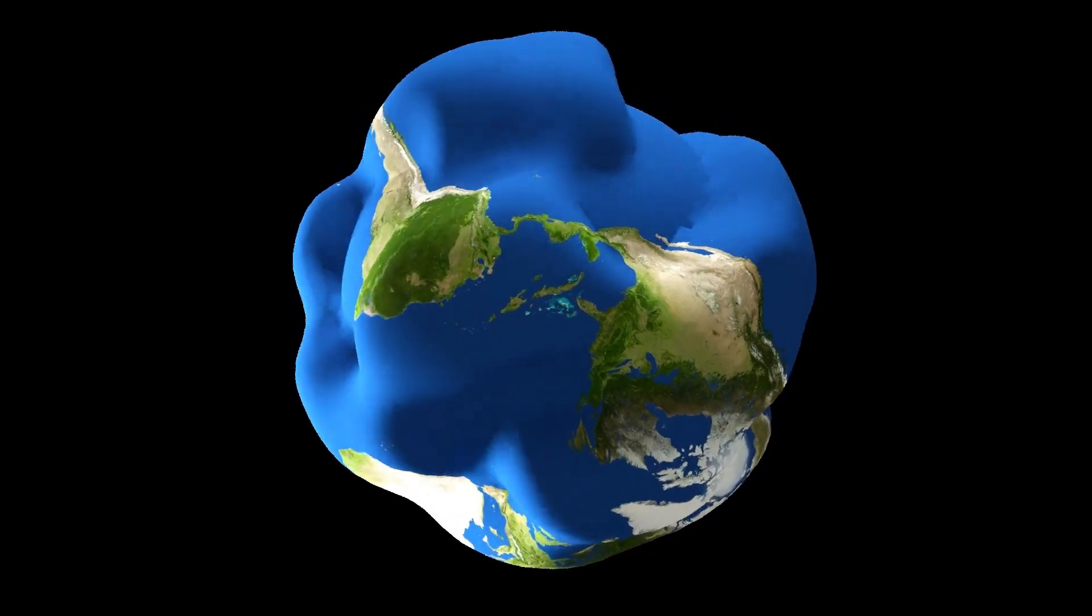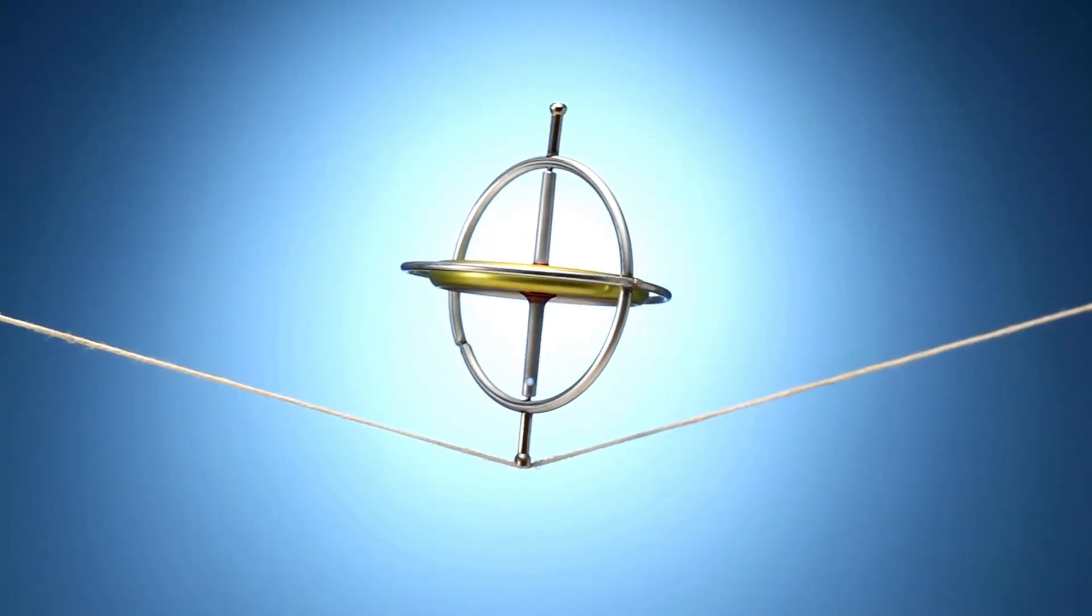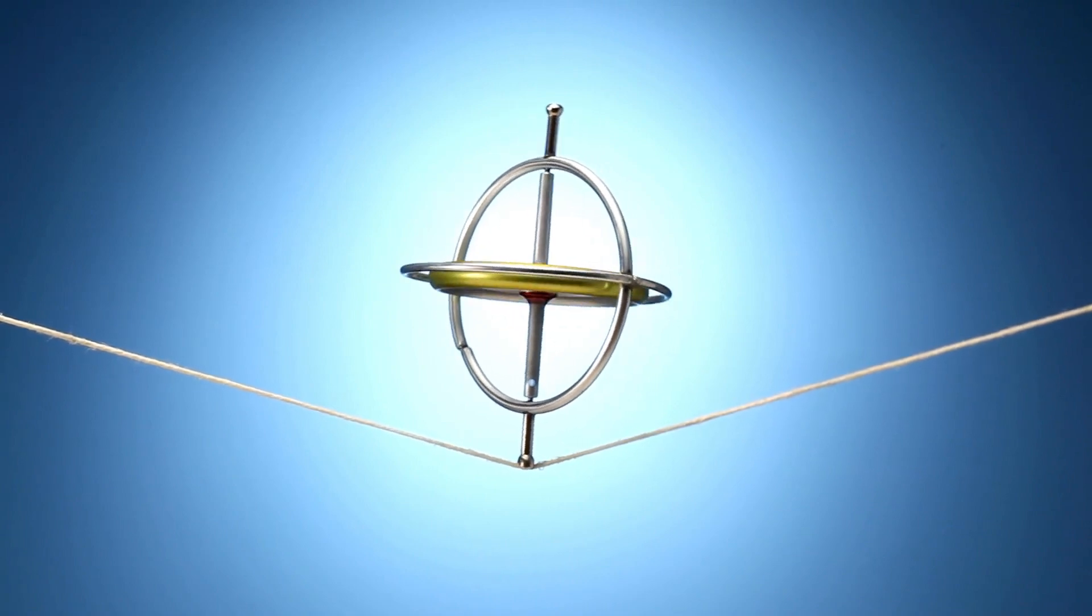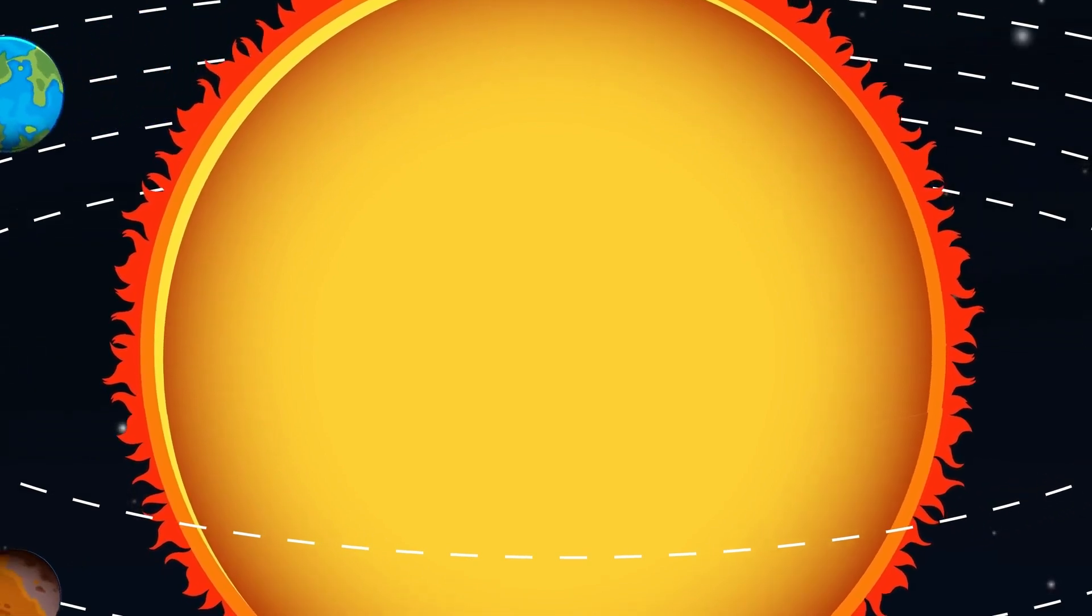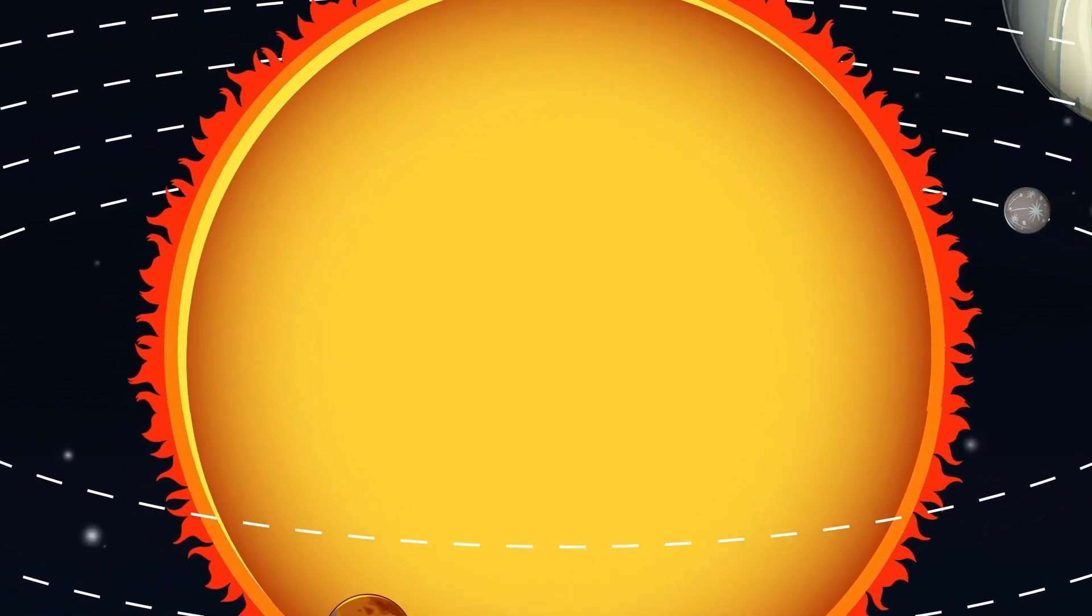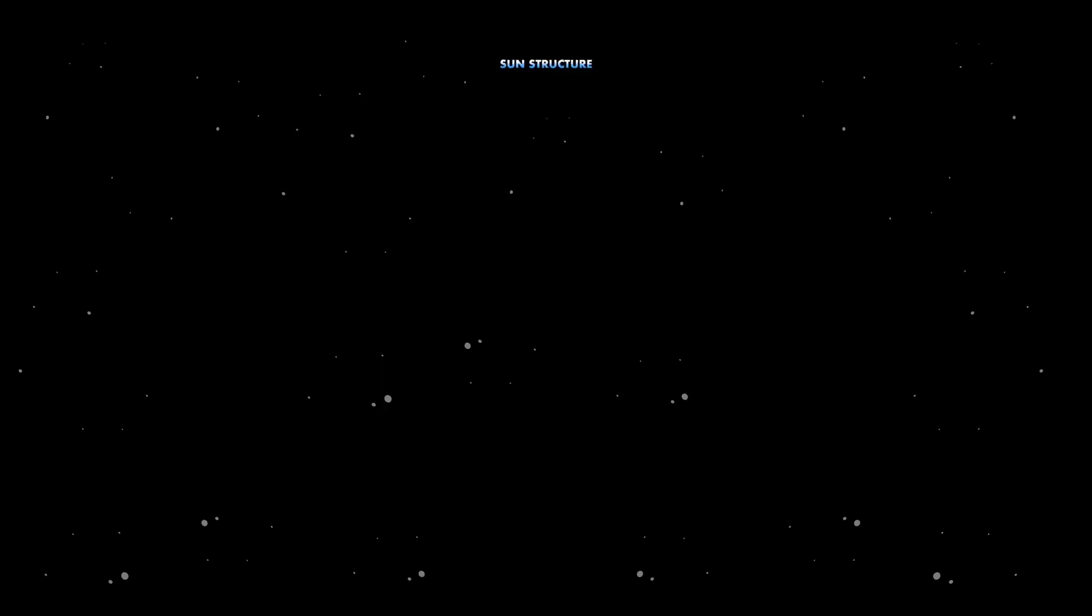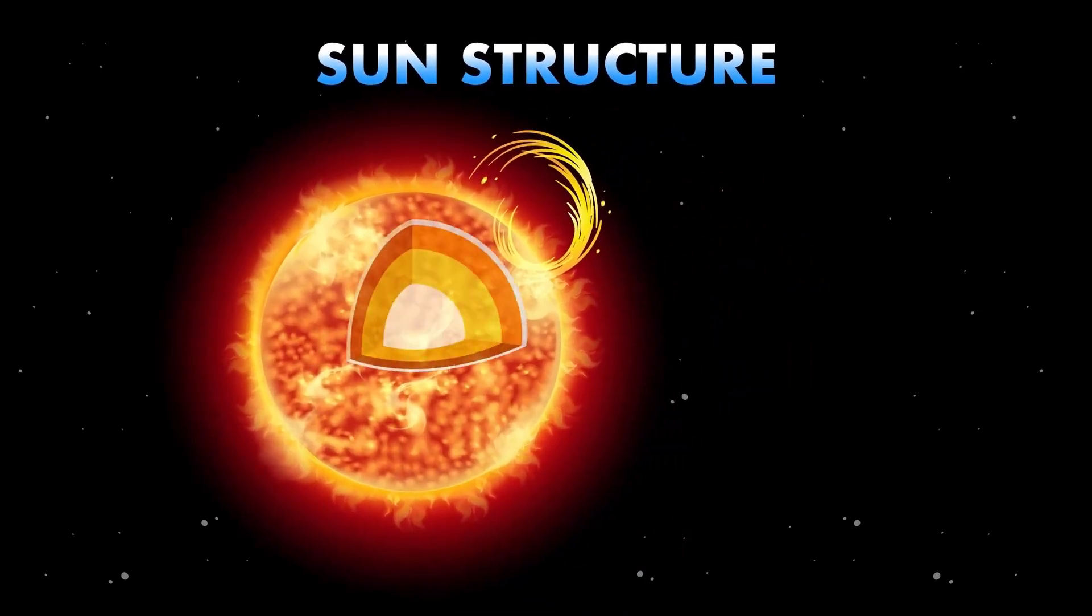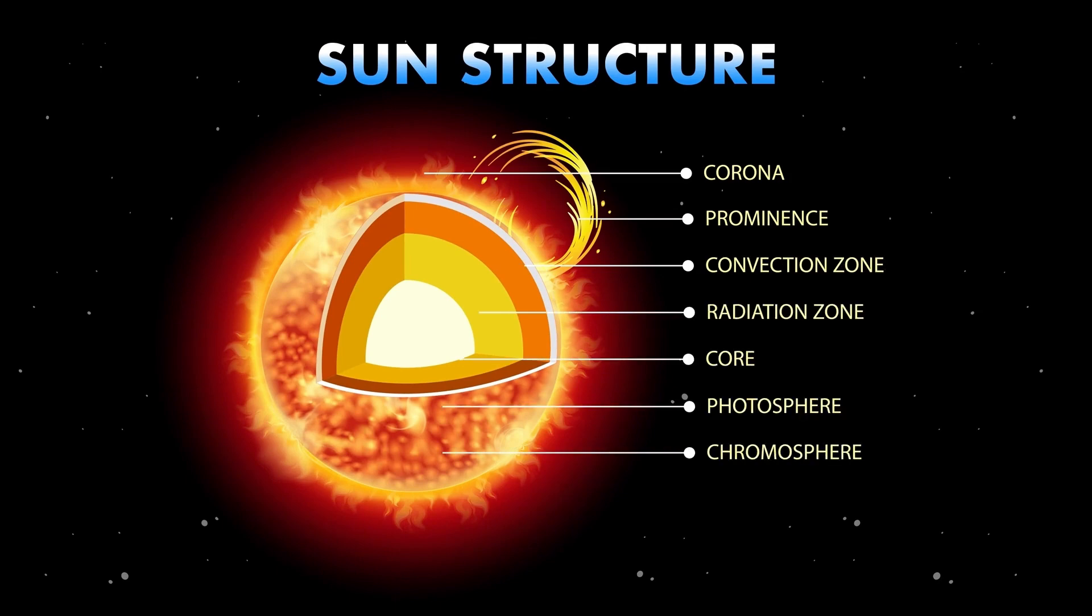We currently know that Proxima b has a mass approximately 1.07 times that of Earth and completes an orbit around its star in just 11.2 Earth days. In comparison, Earth takes 365.25 days to complete one full orbit around the Sun. Proxima Centauri, the host star of Proxima b, is surprisingly dim, emitting only 0.16% of the Sun's brightness across the full electromagnetic spectrum and just 0.056% in the visible light range. Over 85% of the energy from Proxima Centauri is emitted as infrared light.